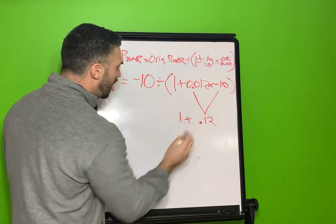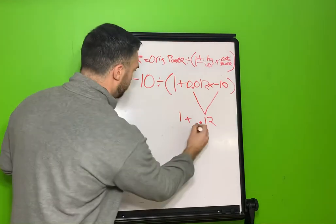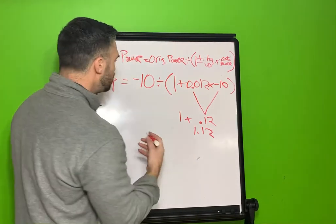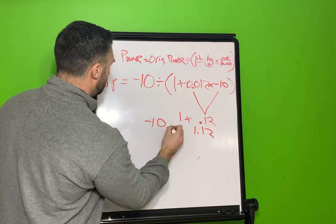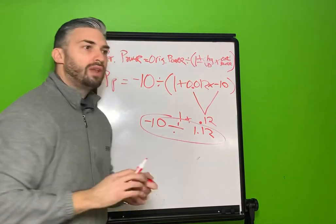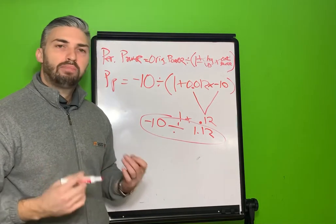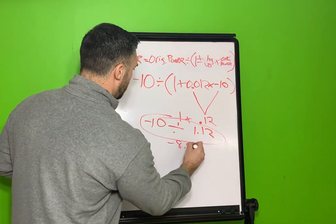And you're going to get 0.12 for that, and then you're going to do within the parentheses, so it'd be 1 plus 0.12, so you get 1.12. And then you're just going to drop everything down. That would be negative 10 divided by 1.12, and you're going to get 8.982 if you use your calculator, or negative 8.982.